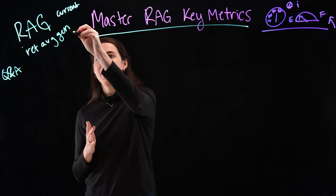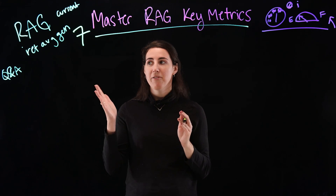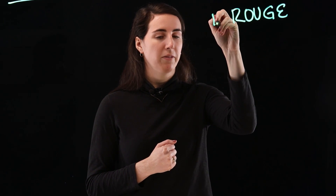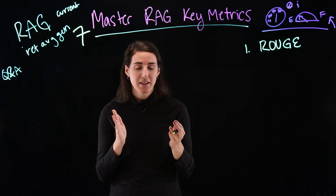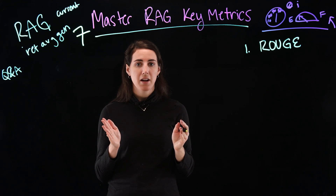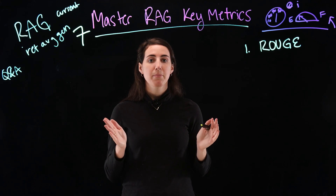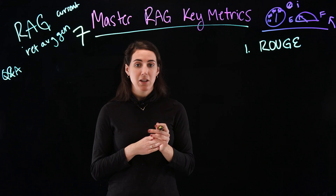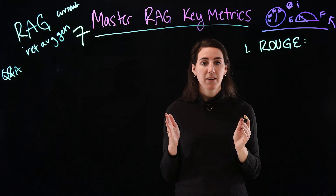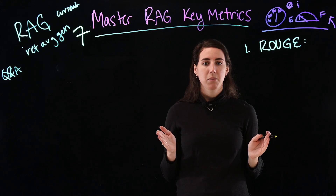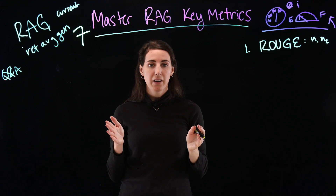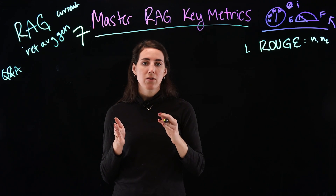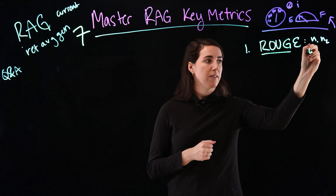Now we're going to talk about seven key metrics to evaluate your RAG models. Our first method of evaluation is our ROUGE score. ROUGE is also known for recall and completeness. When we have a response, we're going to look at that response generated by the model and compare that to a group of expected responses generated by humans. We're going to look at a number of words in a sequence and compare how complete our generated response was to the group of responses. That's known as our ROUGE score.